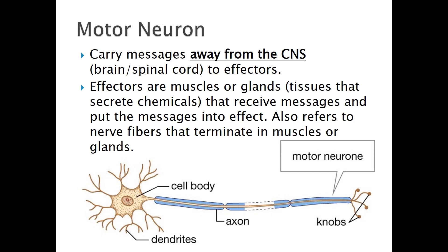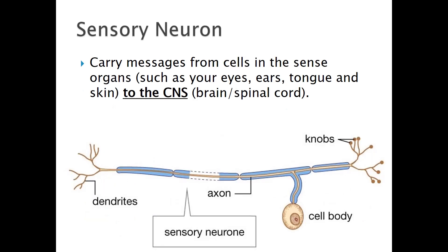Another type of neuron is a sensory neuron, and these work in the opposite way to motor neurons. Instead of carrying messages away from your brain, sensory neurons carry messages towards your brain. They receive information from your sense organs — like your eyes, ears, tongue, and skin — and feed that environmental information up through your spinal cord to your brain so that your brain can make sense of it.